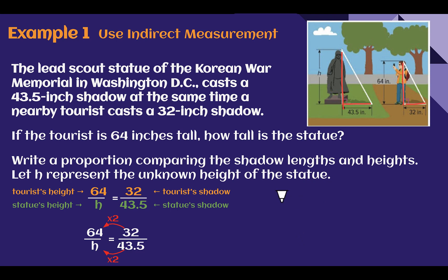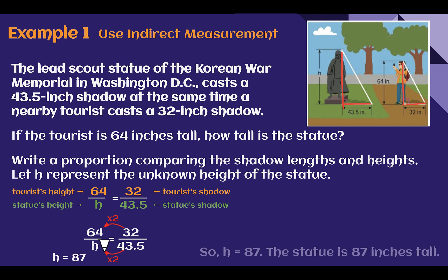To solve this, let's set up a proportion comparing what we know. In our first ratio we do the tourist height to the statue's height — 64 to h — compared to the length of our shadows: 32 on top for the tourist, 43.5 on the bottom for the statue. The tourist's shadow multiplied by 2 gives their height, so if I multiply the statue's shadow by 2, I get 87. The statue's height is 87 inches tall, which is just over 7 feet. Using the shadows, we can figure out the height with indirect measurement.